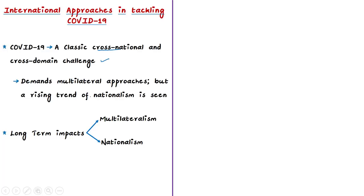In the case of cross-domain challenges, a disruption in one domain will disrupt other related domains. For example, COVID-19 has affected the entire global economy. The intersection of cross-national and cross-domain challenges demands multilateral approaches rather than national approaches. Therefore, we require empowered international institutions of governance to address these challenges.